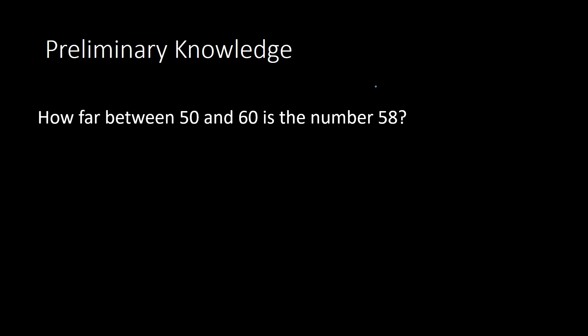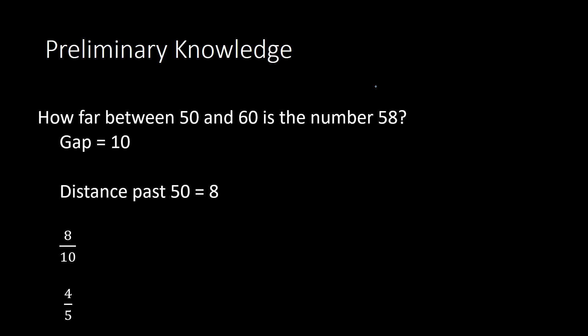Let me walk you through two more examples. Next question: how far between 50 and 60 is the number 58? I find the gap between 50 and 60: 60 minus 50 equals 10. Then, how far past 50 is 58? I take 58 minus 50 to get 8. So 58 is 8 past 50. Then I take 8 divided by 10 — the distance past 50 divided by the gap — and 8 divided by 10 gives me my solution of 4 fifths.